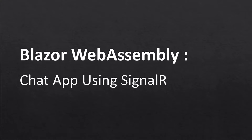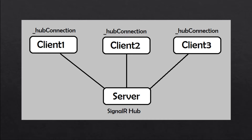Hello everyone, in this episode I'm going to talk about how we can create a chat application using SignalR in Blazor WebAssembly applications. For that, we are going to need the .NET Core hosted version of Blazor WebAssembly application, in which the client is hosted on the browser and the server is hosted on a machine, and clients are connected to the server so that the client can receive and send data. We are going to use this architecture to create a SignalR hub on the server and a SignalR hub connection on the client. This hub connection is connected to the SignalR hub so that it can send messages to the hub, and the hub can send messages to different clients because the clients are listening to this hub. We are going to follow this architecture to create a chat application.